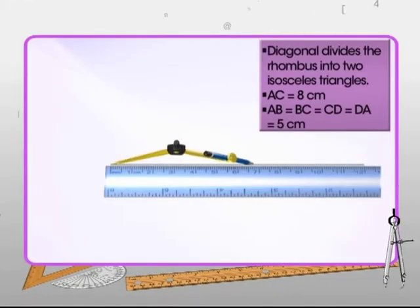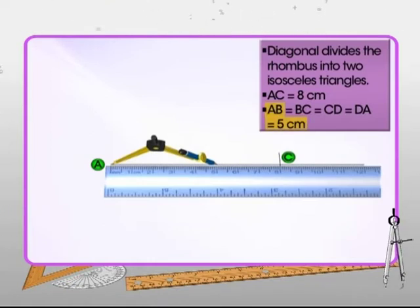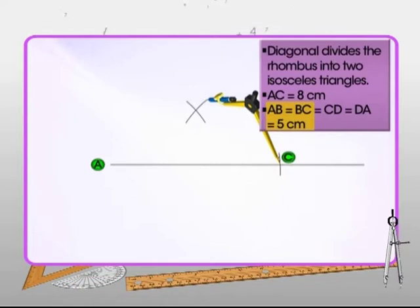Now let's start with the construction. First, draw a line segment whose length is equal to the diagonal AC. The diagonal AC divides the rhombus ABCD into two isosceles triangles ABC and ACD. To obtain triangle ABC, you need to locate point B. Thus, with radius equal to AB and A as center, draw an arc. Since AB is equal to BC, draw another arc from center C with same radius to intersect the previous arc at point B.